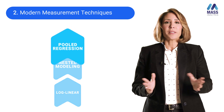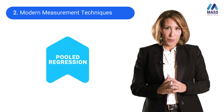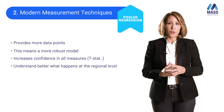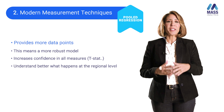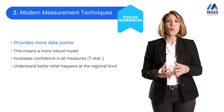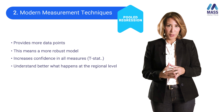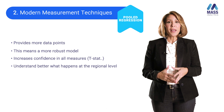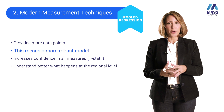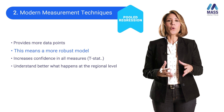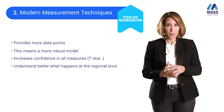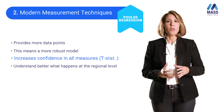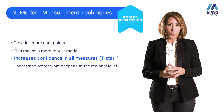Let's start with pool regression. One of the specificities of pool regression is that it allows us to have additional data points. In econometrics, having additional points allows us to have more robust measures — t-stat and p-value are likely to improve.